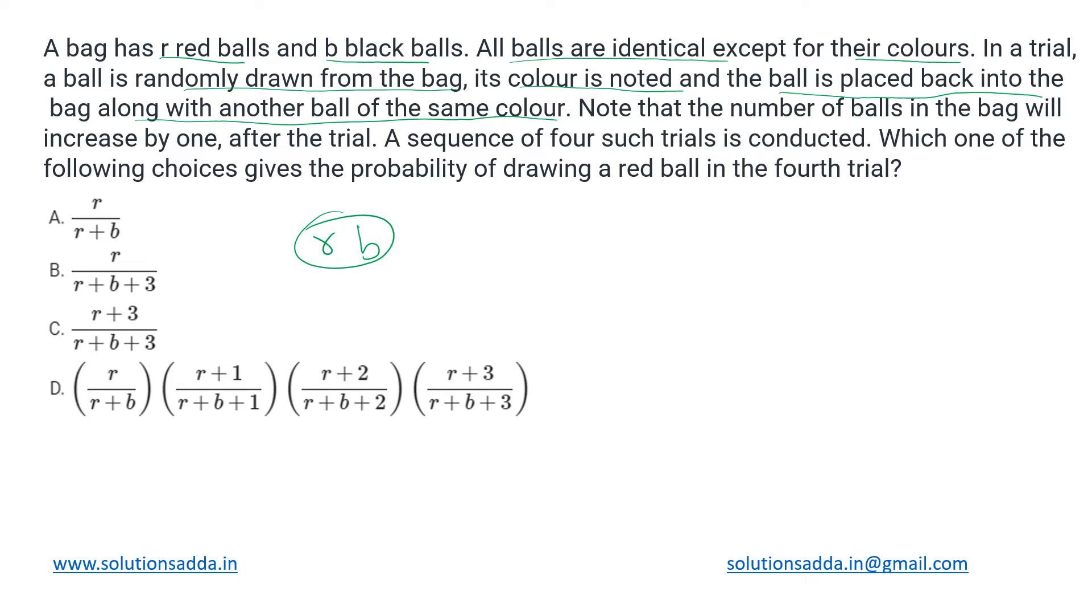If you are drawing red in the first draw, then you will place back that red ball along with one other red ball. So after that operation, the bag will have r plus one red balls and b black balls will remain the same. The number of balls in the bag will increase by one after the trial.